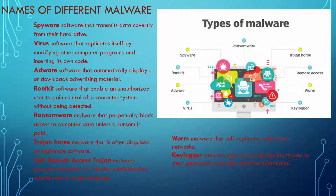A Trojan horse is malware that is often disguised as something that looks legitimate, like a Word file. A remote access Trojan is a malware program that gives the intruder administrative control over your computer. A worm is malware that self-replicates and can infect entire networks and servers. A keylogger is malware used to record the keystrokes you make on your keyboard, with the idea of capturing passwords and other sensitive information.